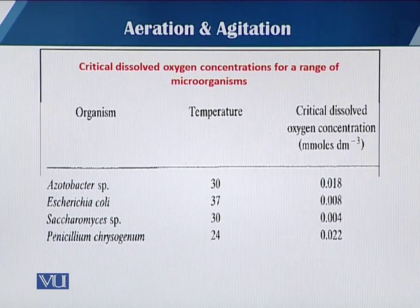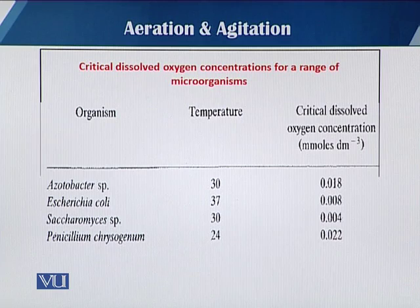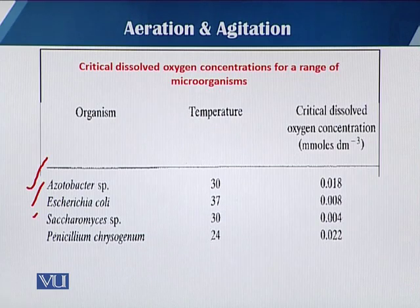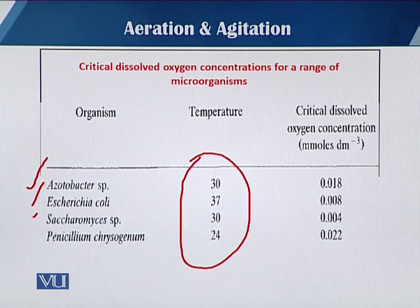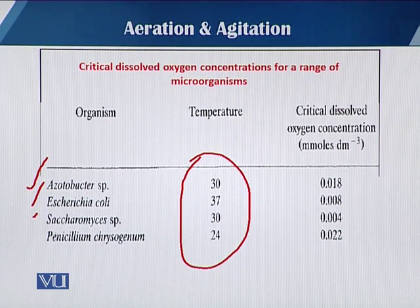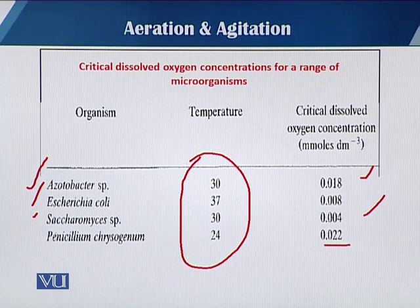This slide shows the critical dissolved oxygen concentration for a range of microorganisms. The table lists four different microorganisms: Azotobacter, Escherichia coli, Saccharomyces, and Penicillium chrysogenum. At different temperatures — since oxygen solubility and organism requirements vary with temperature — the critical dissolved oxygen concentrations are 0.018, 0.008, 0.008, 0.004, and 0.022 millimoles per liter of medium.